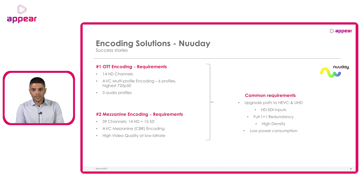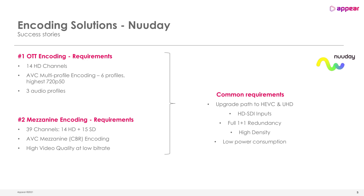Let's have a look at the following two cases at New Day in Denmark. Case one is an OTT encoding system, while case two is for mezzanine encoding. Looking at the OTT encoding case, we have 14 HD channels with multi-profile AVC encoding of six profiles, with the highest at 720p50, and with the need for different audio profiles for each of the videos.